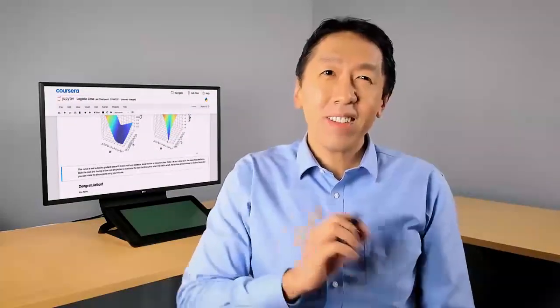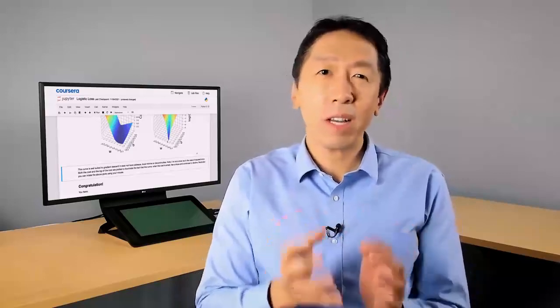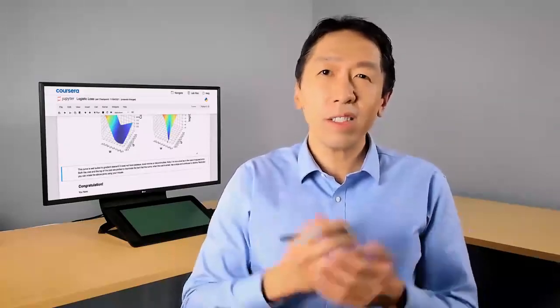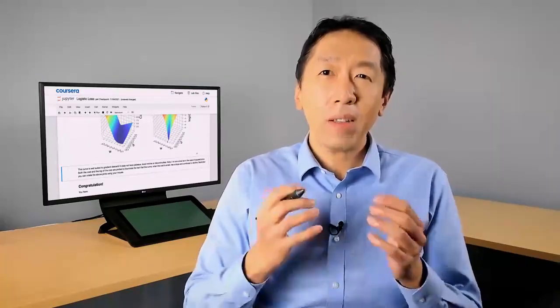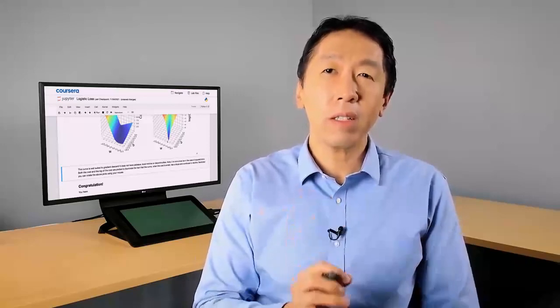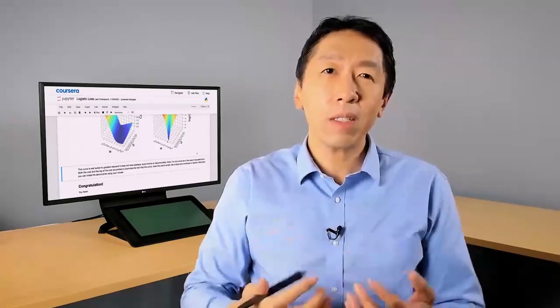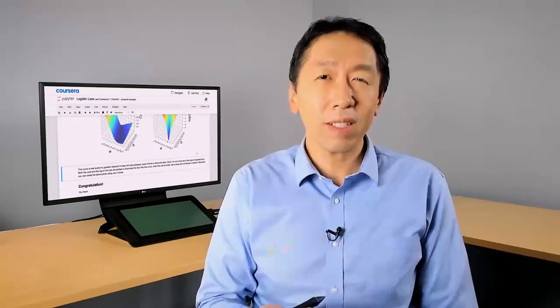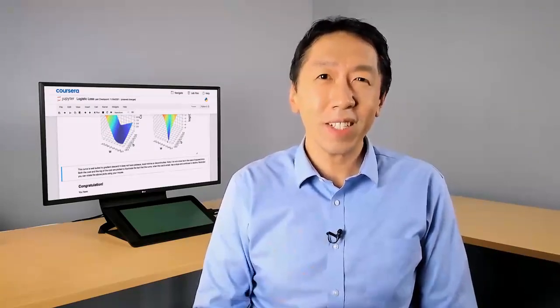All right, so we're seeing a lot in this video. In the next video, let's go back and take the loss function for a single training example and use that to define the overall cost function for the entire training set. And we'll also figure out a simpler way to write out the cost function, which will then later allow us to run gradient descent to find good parameters for logistic regression. Let's go on to the next video.